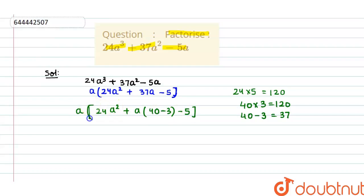Now we will solve this. So a into 24a² plus we can write it 40a - 3a - 5.